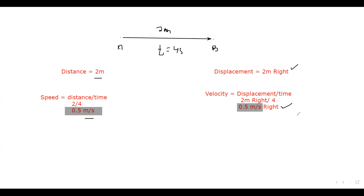The meaning of velocity means displacement divided by time — how much displacement an object covers in a unit time, that we call velocity.